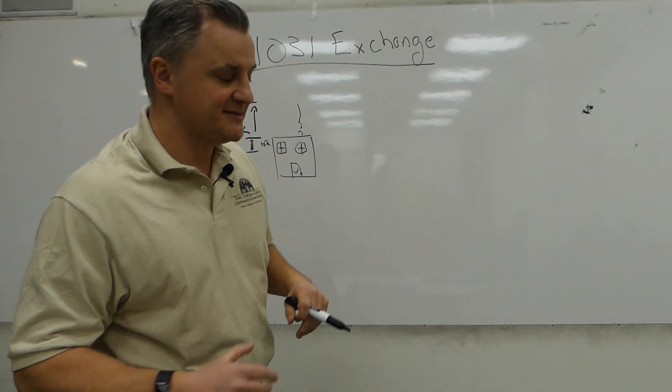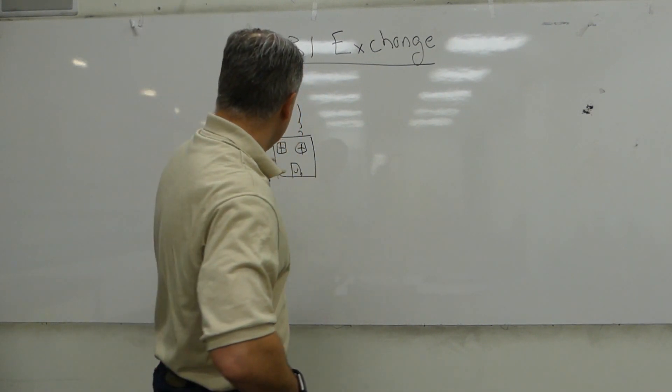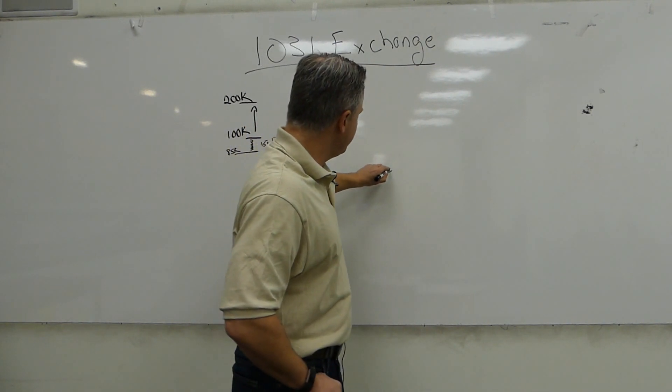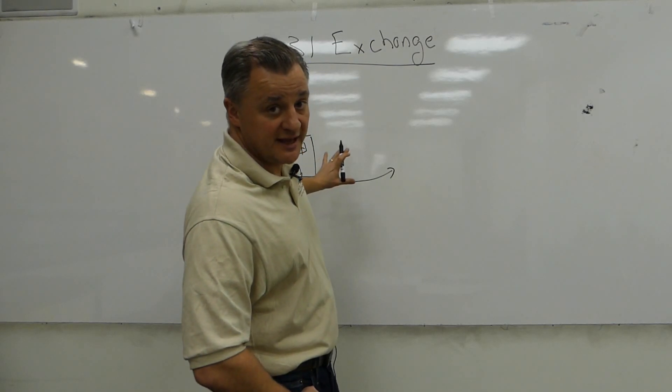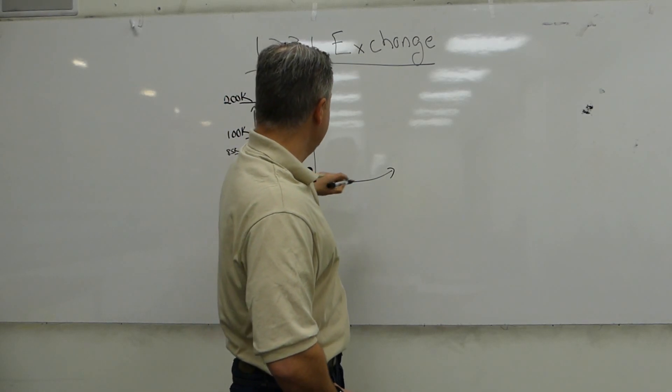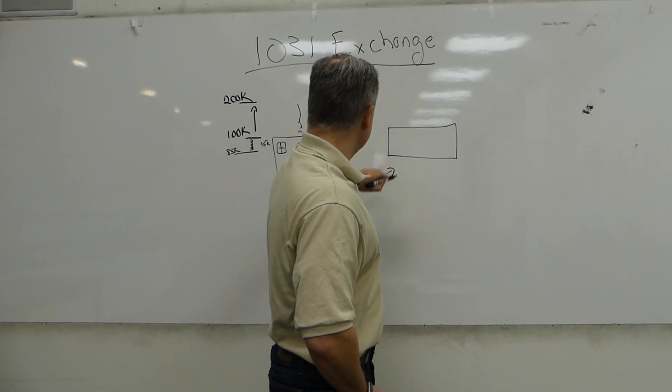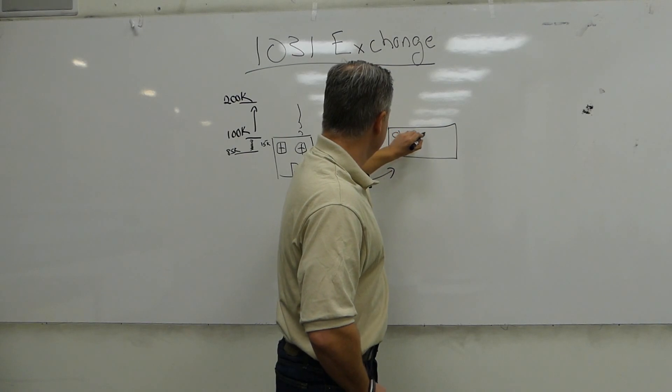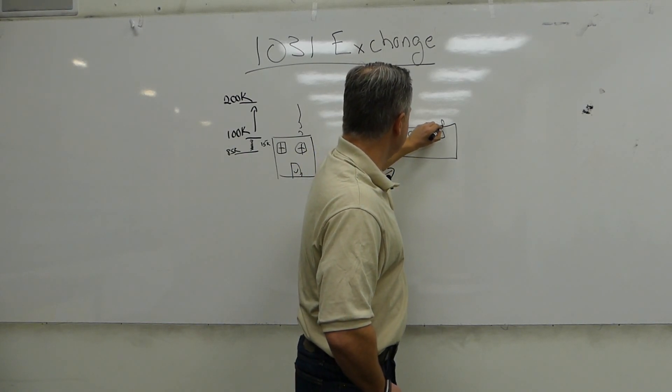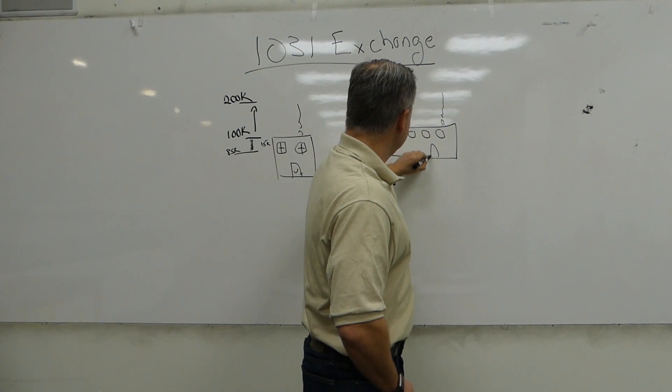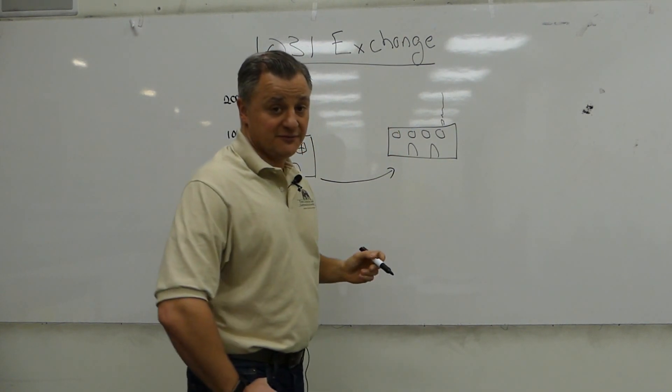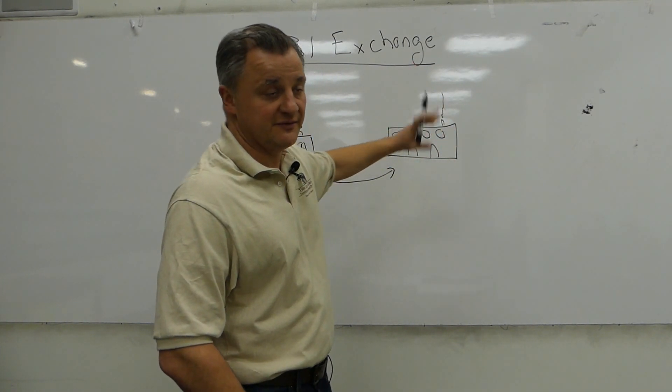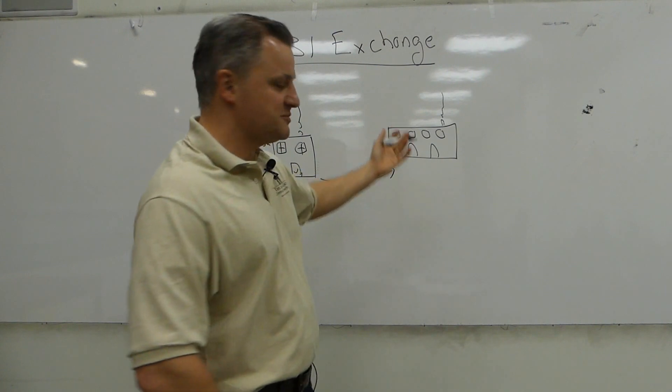So here's what a 1031 exchange is. Here's the nuts and bolts of it real quick. So you're going to sell this property and you are going to transfer all of these proceeds, all of them. You can't take a dime and put it in your own pocket. And you're going to go and buy a bigger asset over here. And I'm going to make it physically bigger so you can see that it's bigger. It's got even more windows, it's still got a little smokestack at the top, and it's got a couple of doors on it. So at my very first 1031 exchange, we sold a duplex and we bought a four family building. That was our very first one. So let's pretend that's the same thing here.